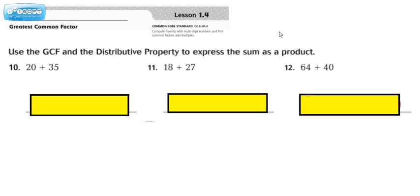Whenever you see something like that as a set of directions, step one is to find the GCF of both addends. So let's take a look at number 10.